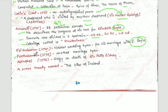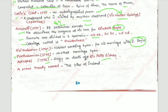Prothalamion was published in 1595 — another marriage hymn. Astrophal, published in 1596, was written by Spenser on the death of Sir Philip Sidney. A prose treatise named The View of the Present State of Ireland was also written by Spenser.